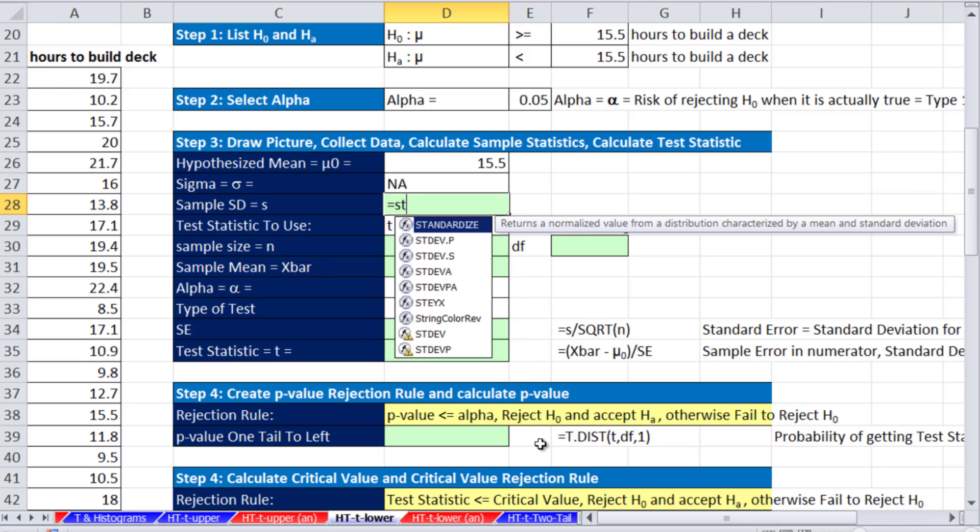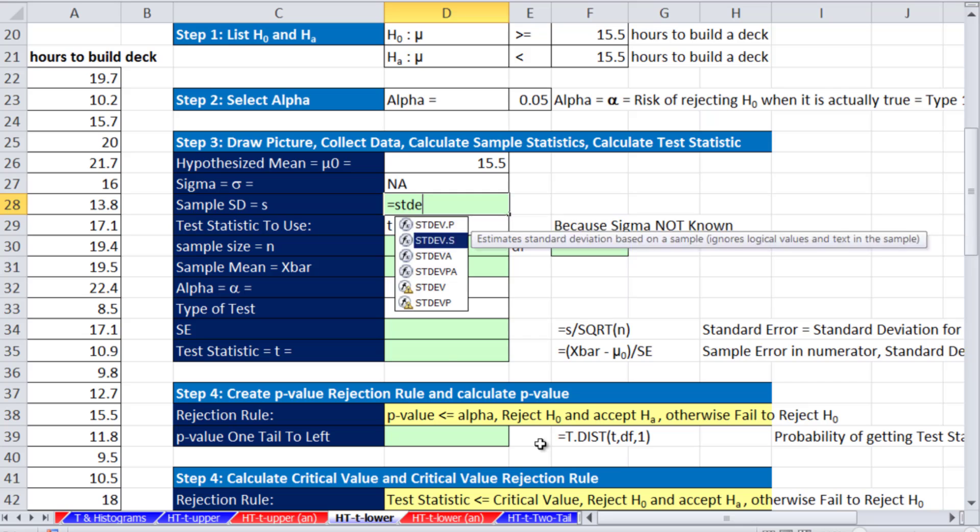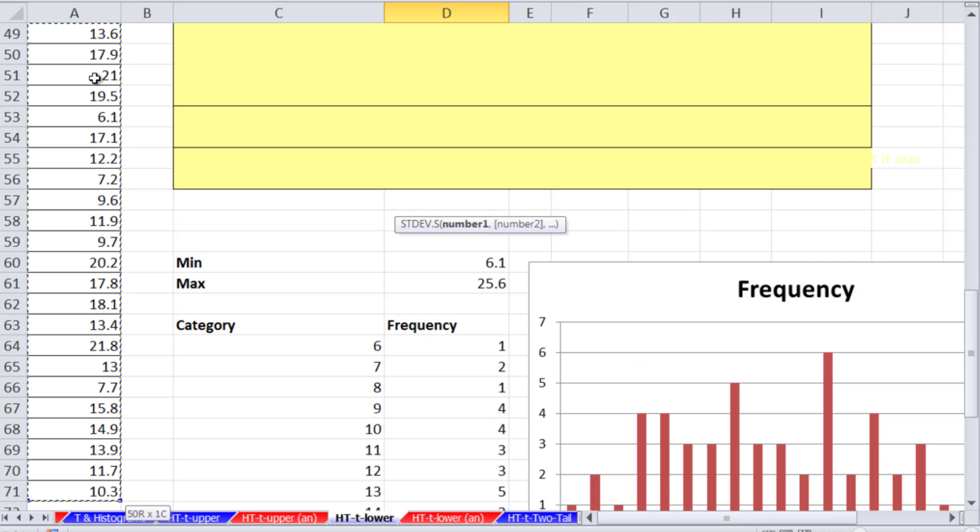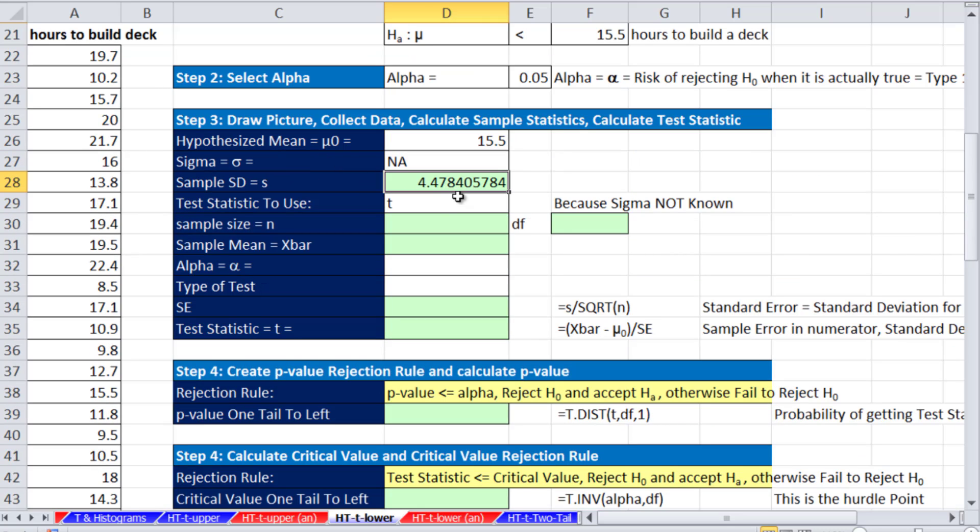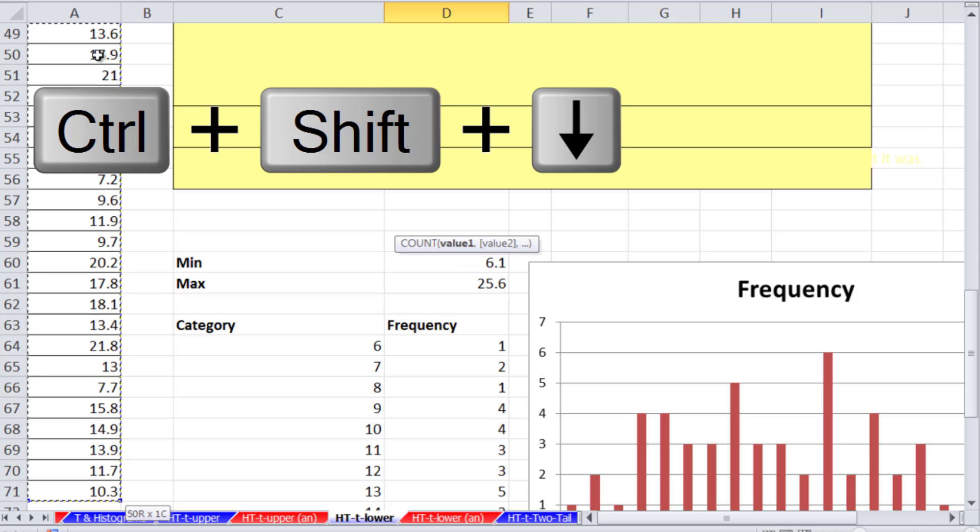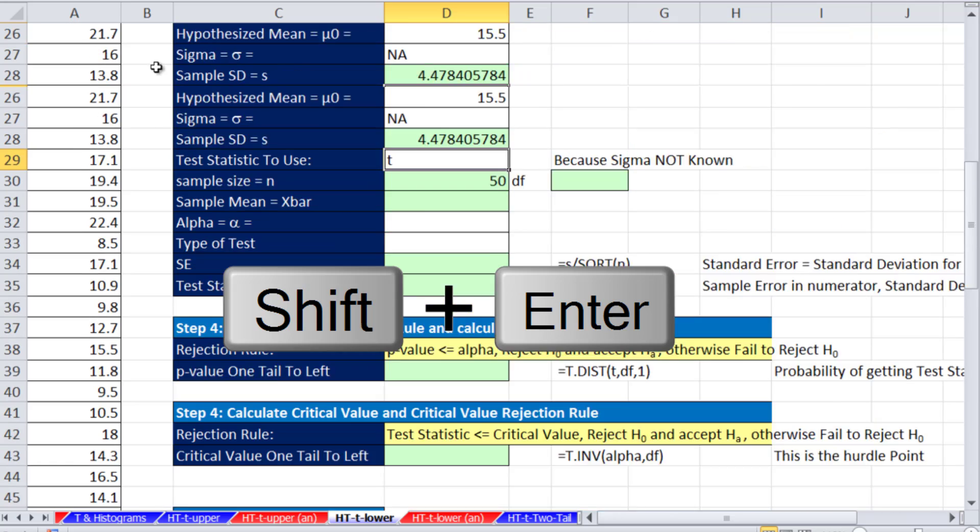We'll calculate our standard deviation, STDEV.S. Control shift down arrow, shift enter. So we have a standard deviation for the sample of about 4.5 hours. Sample size, we'll use count because we're counting numbers. Control shift down arrow, shift enter.